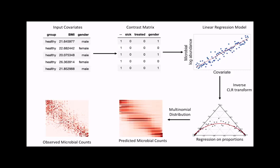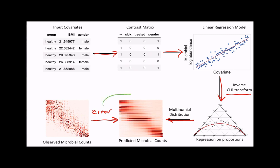Here is the high-level bird's eye view of our differential abundance model. We're going to have a model that takes in our covariates using the contrasts we have specified. This input will be fed into a linear regression used to estimate the microbial log fold change we are interested in. The linear regression predictions will then be fed into an inverse CLR transform to convert these log ratios to proportions. Finally, these proportions will be plugged into a multinomial distribution to predict the microbial counts. The observed microbial counts are then used to evaluate the likelihood, and the model is tuned to obtain the best description of our data.